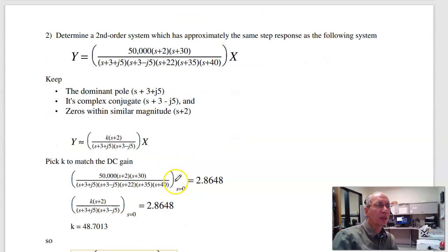Problem 2: Given this system, find a second-order approximation to it. To do that, I want to keep the dominant pole—that's right here—and its complex conjugate, so keep the two poles. For the zeros, there is one zero that's about the same magnitude as the poles. The other zero is about ten times faster. Ignore it.